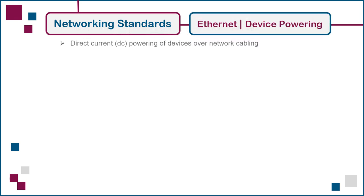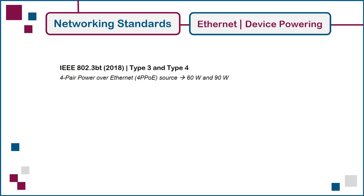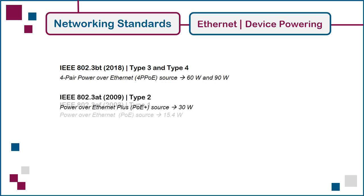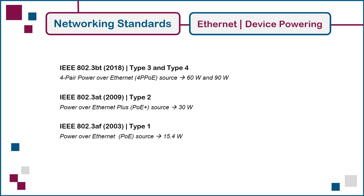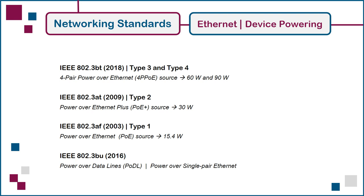Power over Ethernet (PoE) enables DC powering of devices over the same network cabling used for Ethernet signaling. The most recent update defines two higher power levels using all four pairs: Type 3 specifying 60 watts and Type 4 specifying 90 watts at the power source end of the link. This is a near six-fold increase from the original Type 1 PoE standard issued in 2003, which specified 15.4 watts. The introduction of single-pair Ethernet has also made it necessary to develop a corresponding powering standard called Power over Data Lines, sometimes referred to as PoDL.